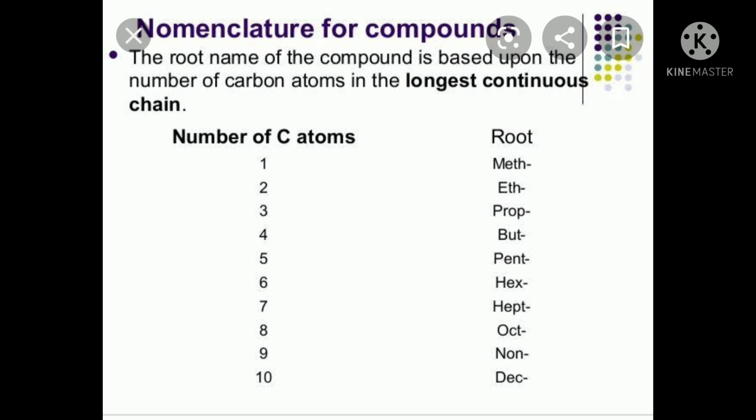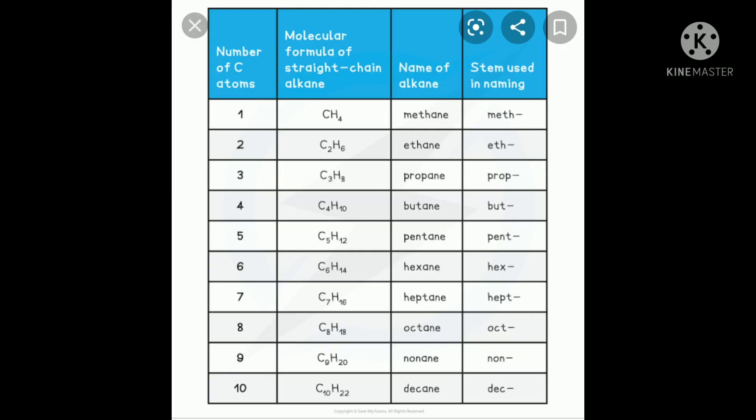The root words by carbon count are: 1 = meth, 2 = eth, 3 = prop, 4 = but, 5 = pent, 6 = hex, 7 = hept, 8 = oct, 9 = non, 10 = dec.